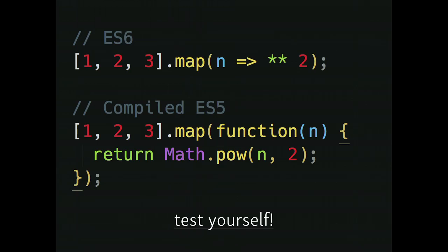Here's an example from Babel's own website — they have a demo area for you to try. When you write ES6 code, here we have an implicit return, an arrow function, and an exponent operator. All Babel does is turn that arrow function into a regular function, the implicit return into an explicit return, and the exponent operator into Math.pow. So that's pretty cool.